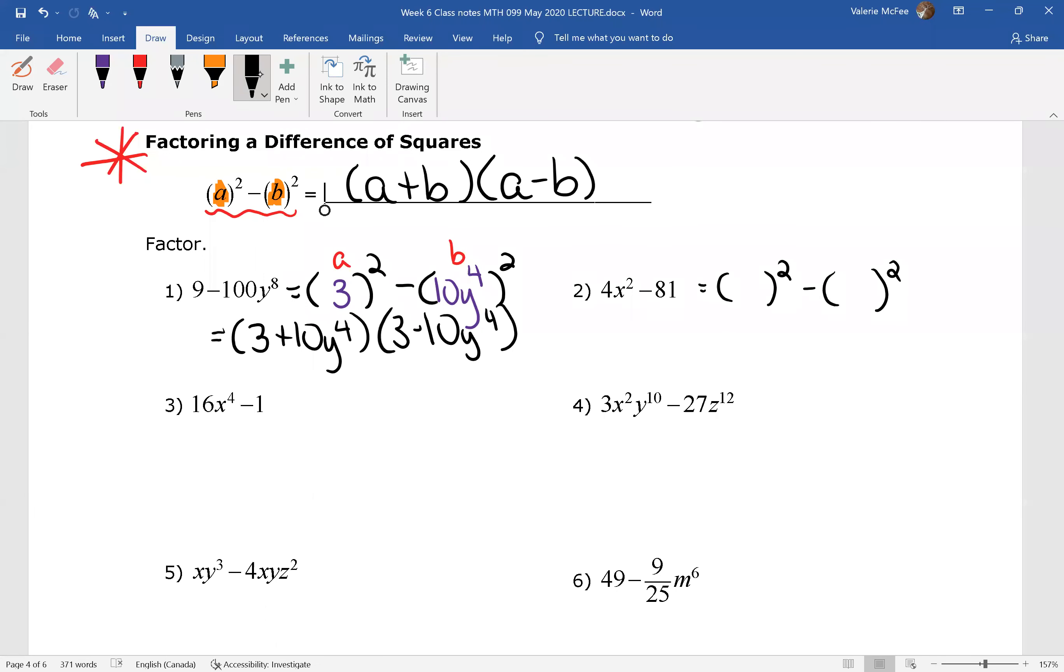What will a equal? 2x and b? 9. So now we can write this in factored form. a minus b times a plus b.